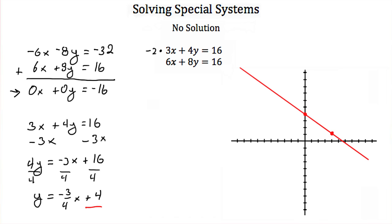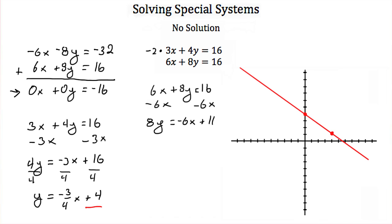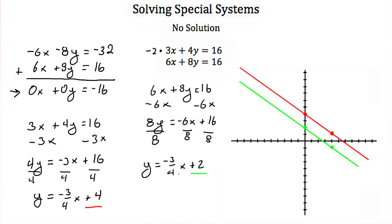Now for our second equation, 6x plus 8y equals 16. I'm going to subtract 6x from both sides to get 8y equal to negative 6x plus 16, then divide everything by 8. We get y is equal to negative 3/4 x plus 2. To graph that, we go to positive 2 on the y-axis, then down 3 and over 4, and connect the points.